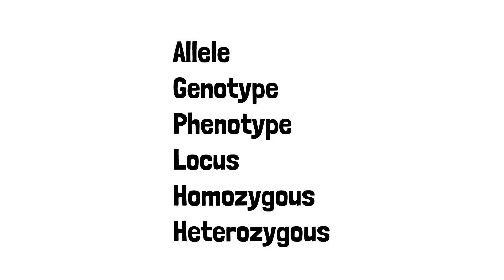Now these terms — homozygous, heterozygous, alleles, genotypes, phenotypes — are something you're going to have to make sure you learn the name of and know exactly what they are, so you don't get confused if they come up in an exam. Make sure you look them up and understand them, as it will make learning inheritance diagrams much easier.